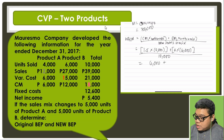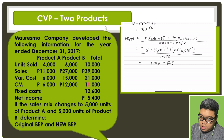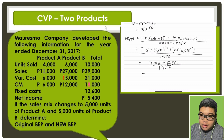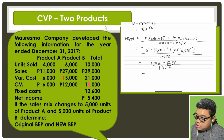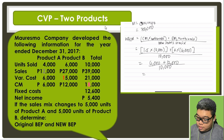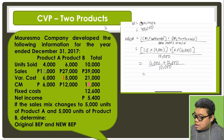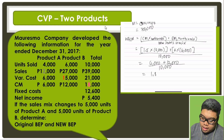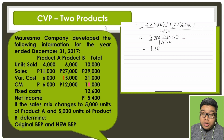Plus 2 times 6,000, which is 12,000. So that is 6,000 plus 12,000, divided by 10,000. We get a weighted average contribution margin of 1.8.